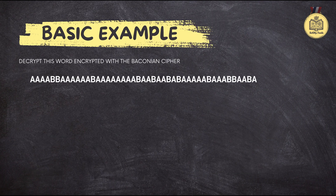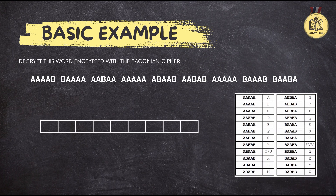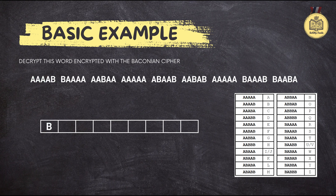To make sure we've got this down, let's try a simple example together. Ready to put our new skills to the test? Let's say we have a secret message that's already been organized into groups of five. Our mission is to figure out what each group represents using our trusty Baconian cipher key. Looking at your cipher key, what letter does that first group of A's and B's represent? According to the key, group one translates to the letter B.